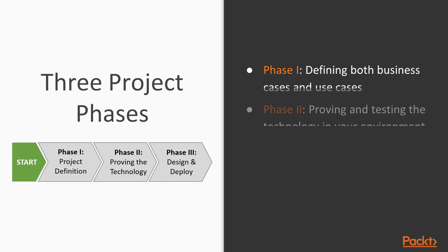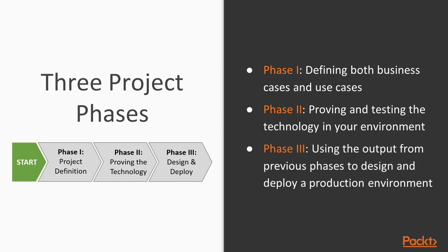The second phase is all about proving the chosen technology and that it delivers against all of your requirements. It gives you the opportunity to test the solution in your own environment. The final phase is all about taking the information from the first two phases, along with the assessment data, and then designing an environment that suits your requirements. Don't forget to refer back to your project definition and success criteria as you work through the deployment, to make sure you remain on track with your original goals.